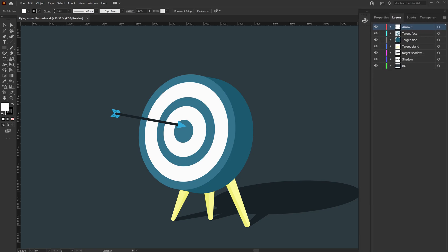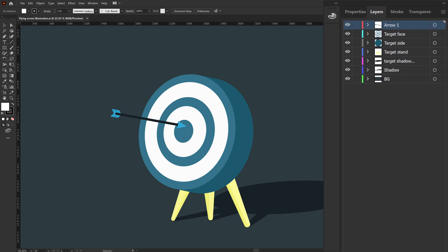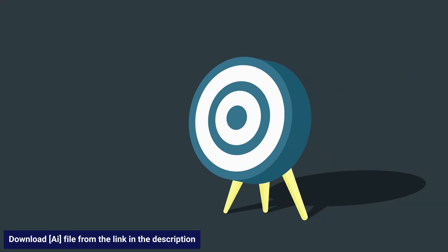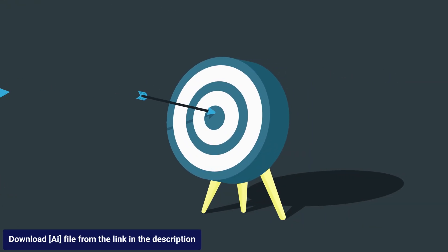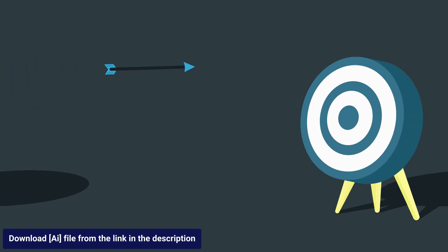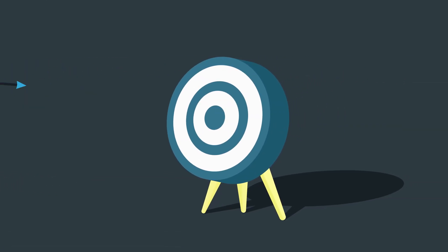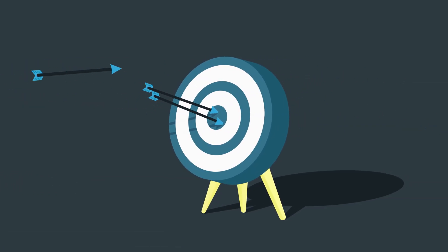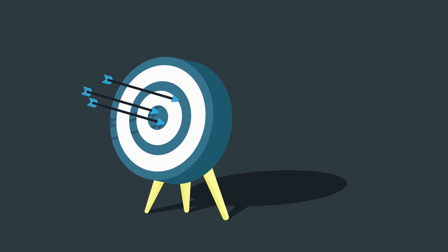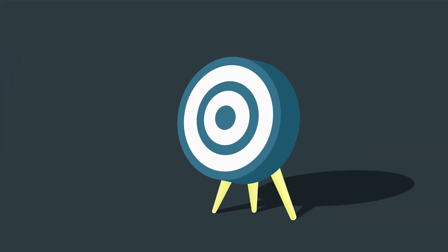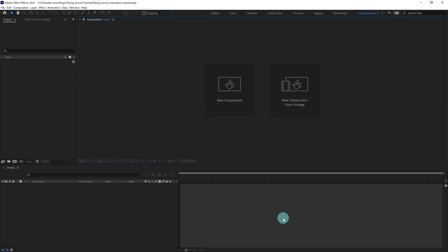This is how the layers are separated in Illustrator to prepare the file for animation. I have also provided the illustration file — you can collect it from the link in the description. Let's jump into After Effects and create a new composition.